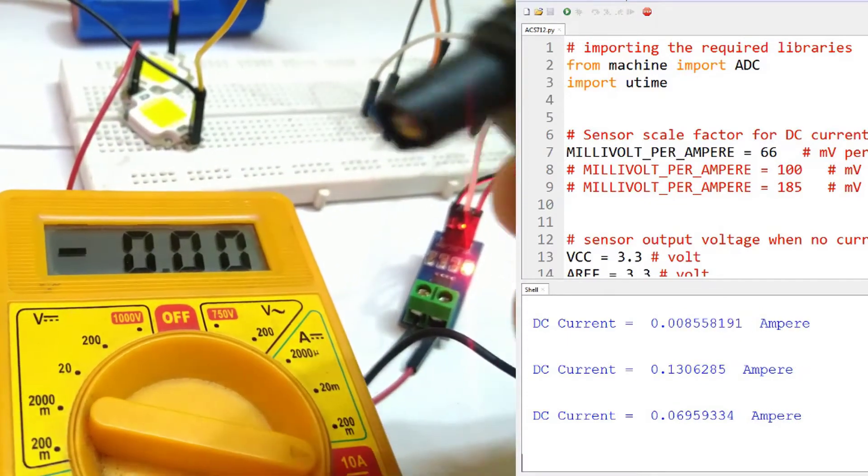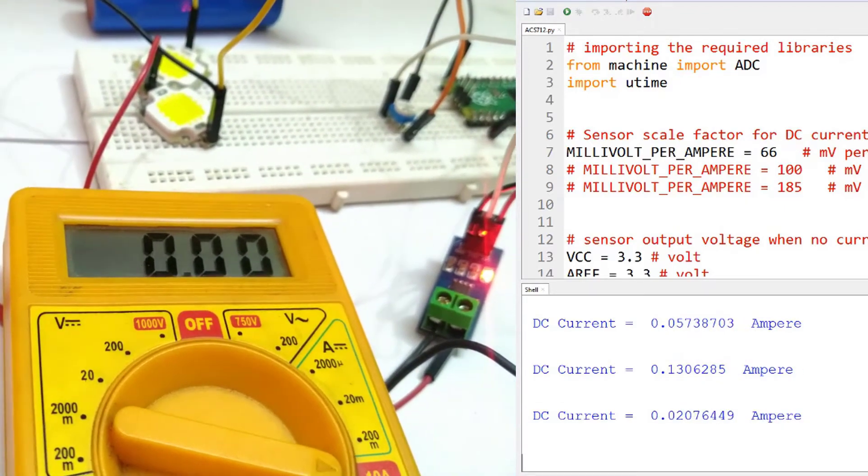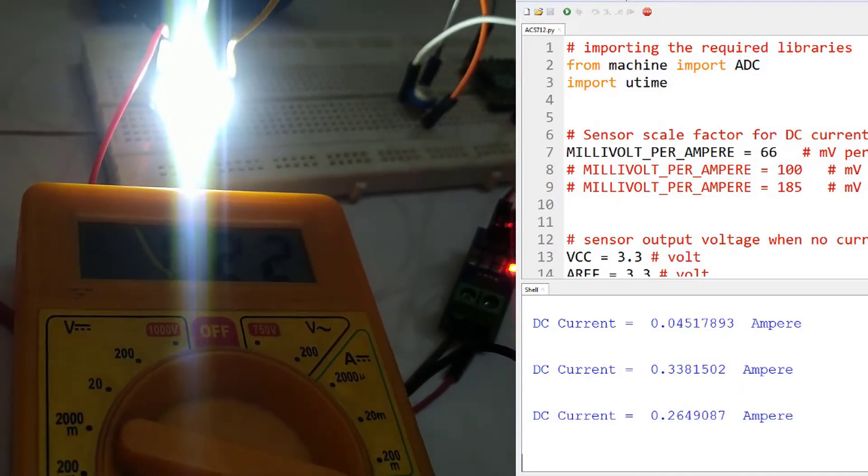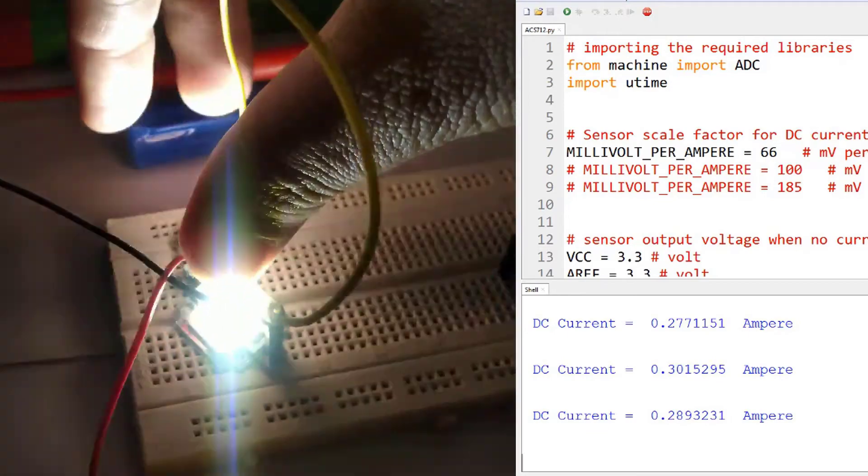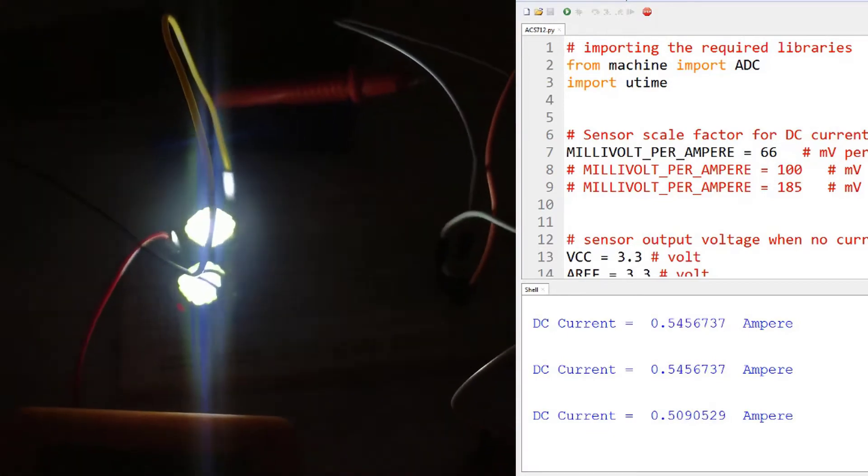So let me connect this wire to the multimeter to complete the circuit. As you can see, these two loads are running at full brightness.